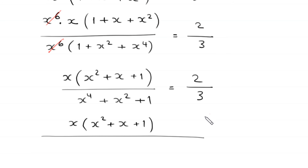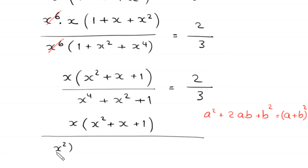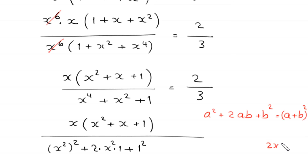According to the algebraic identity a squared plus 2ab plus b squared equals (a plus b) whole squared, we write x to the power 4 as (x squared) whole squared, and 1 as 1 squared, with 2 times x squared times 1 in the middle, giving 2x squared. Since the original expression has only 1x squared, we subtract x squared to compensate, giving us the denominator as (x squared plus 1) whole squared minus x squared, equal to 2 over 3.